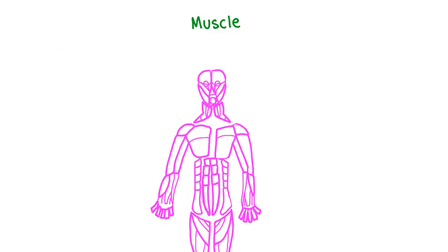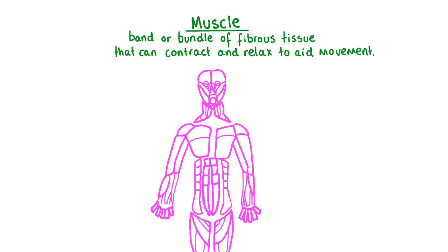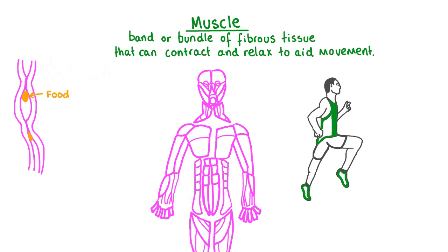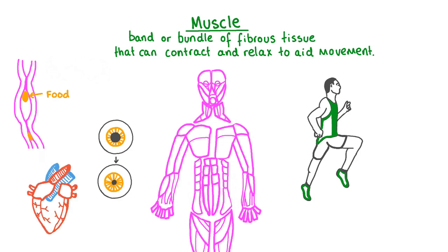Each adult human body contains around 650 muscles, making up about half of your total body weight. Muscles are structures in the body that aid movement by contracting and relaxing. They help food move through our digestive system after a meal, allow our legs and arms to move when running a race, and make the pupils in our eyes become smaller when we look into a bright light. Without the ceaseless action of our muscles, even our heart would stop beating.